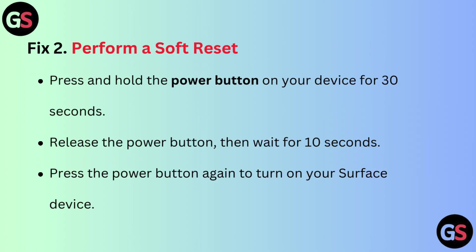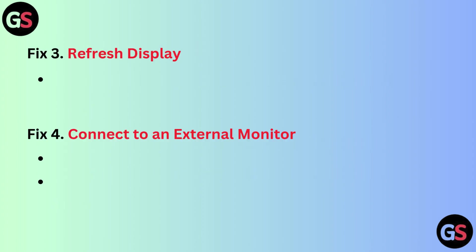Fix 2: Perform a soft reset. Press and hold the power button on your device for 30 seconds. Release the power button, then wait for 10 seconds. Press the power button again to turn on your Surface device.